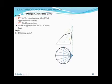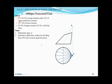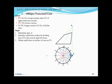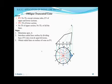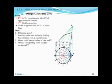Step one: determine the apex by drawing lines along the slant edges to give apex A, and locate A on the top view as well. Step two: introduce radial lines by dividing the base into even and equal divisions, labeling one through twelve. Project these points onto the front view. Points one, two, three, four, five, six are visible; seven is at the extreme; eight through twelve are invisible. Draw radial lines to apex A.